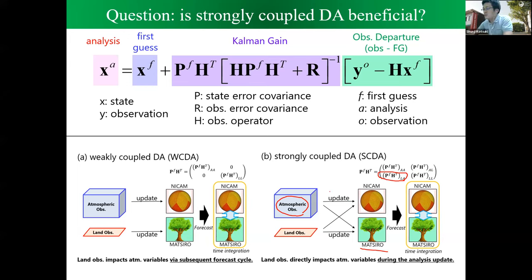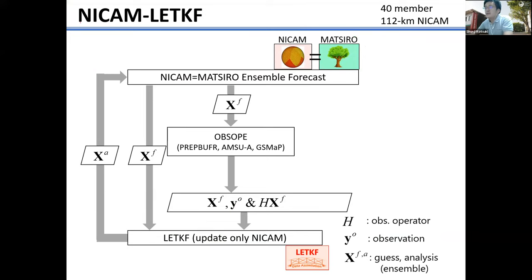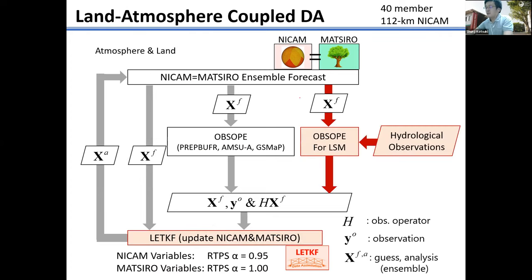We have been investigating how this strongly coupled data assimilation benefits forecasting progress. This is our existing data assimilation system. We are using the global atmospheric model called NICAM, which has a land surface model named MATSIRO — the Integrated Land Simulator — developed in Japan. This model provides ensemble forecasts, and we have an observation operator for conventional observations, satellite radiances, and precipitation observations. Additionally, we added an observation operator for the land surface model to assimilate hydrological observations in this study.